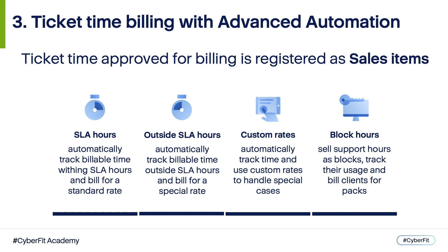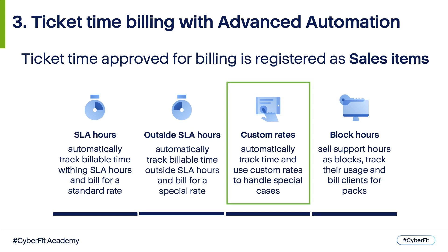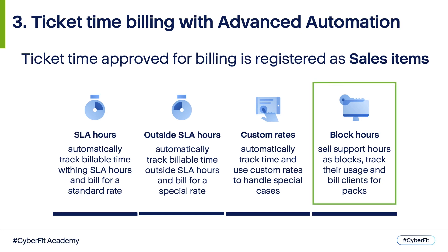Let's see what billing options you can use. First, you can define a default hourly rate for ticket work done within SLA hours — it will be automatically applied, so your technicians don't need to remember all billing rules and client agreements. Second, you can have a default hourly rate for ticket work done outside SLA hours — for example, a more expensive rate applied automatically. Third, you can set up custom rates and apply them to specific clients or activities. Finally, you can use the block hours option in the client contract, when clients pay for an agreed quantity of support hours as a pack — Advanced Automation will track those hours and notify you when it's time to renew the block.